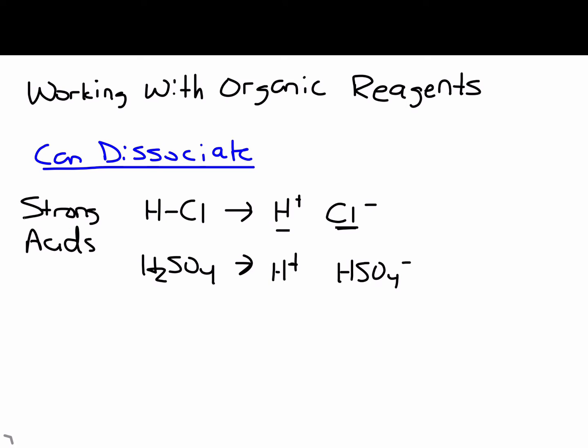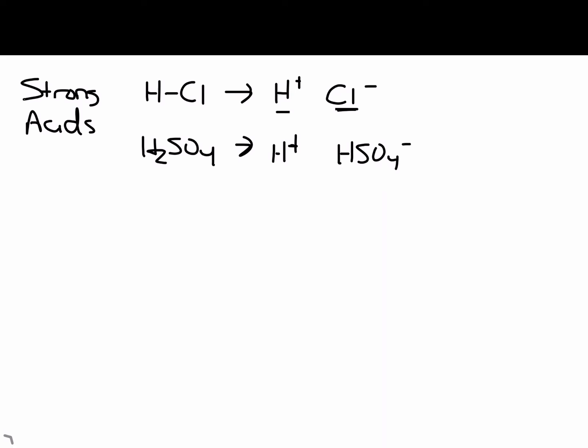The other class of compounds we frequently encounter that would dissociate are metals or metal ions. So what you want to look for here are metals bonded to non-metals. So easy example, sodium hydroxide. Here we have the metal sodium, that's a group 1A metal bonded to the non-metal oxygen. And it's perfectly fine to treat this as sodium cations and hydroxide anions.